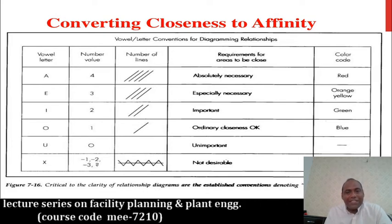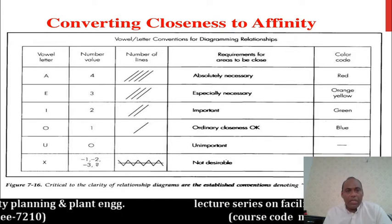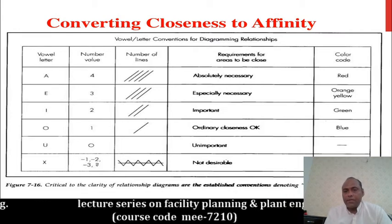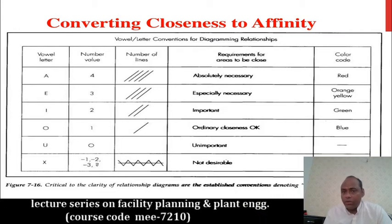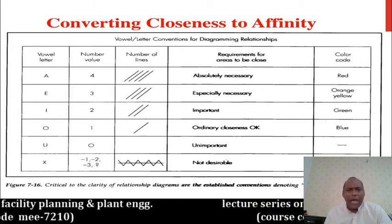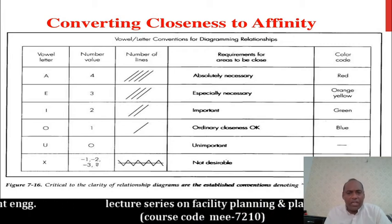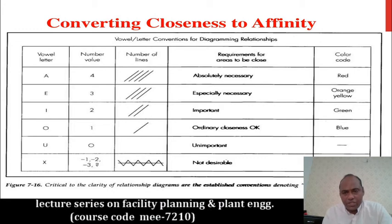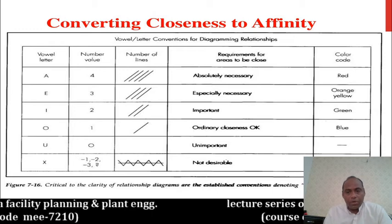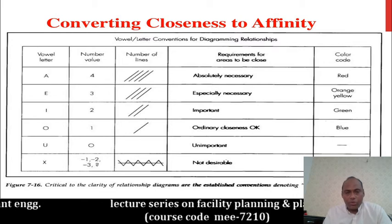If two activities have an E relationship it means especially necessary, not absolute. If it is an I relationship it means important but not absolutely or especially important. O, U, and X are considered not desirable. In your planning, you assign ratings in your activity relationship chart, and you must know your A relationship should be no more than 10 to 20 percent of your total planning.